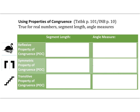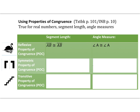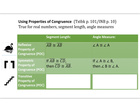This leads us to the properties of congruence. Our reflexive property of congruence is when you have the same thing on both sides — true for both segment length and angle measure. So segment AB is congruent to itself, just like angle A is congruent to itself. Our symmetric property is where we rearrange and switch — it's symmetric on both sides. So if AB is congruent to CD, then CD is also congruent to AB. Same with angles: if angle A is congruent to angle B, then angle B is congruent to angle A.